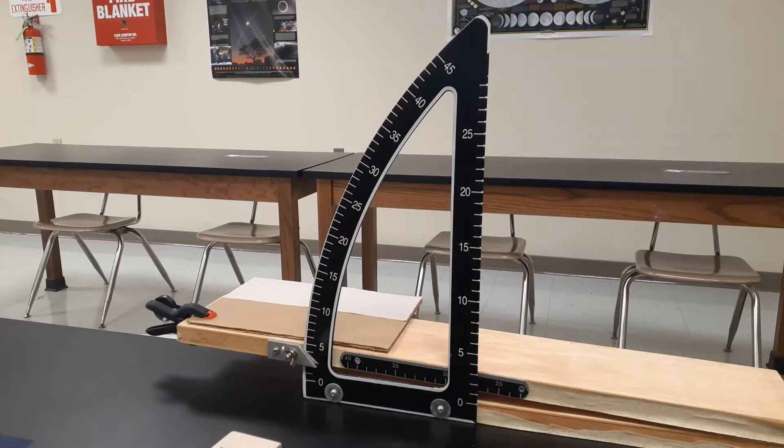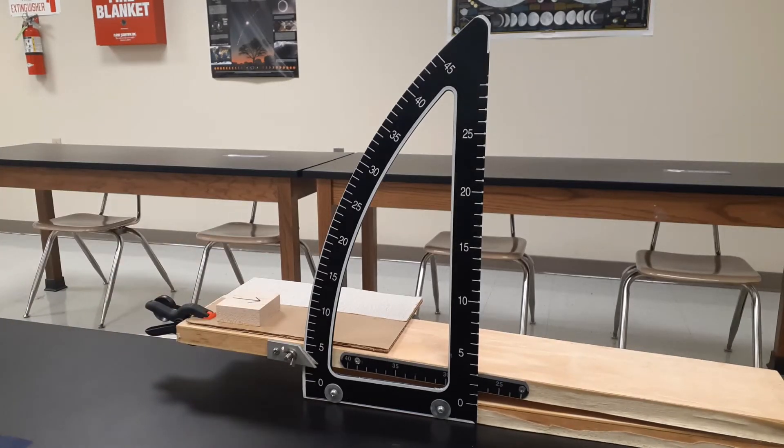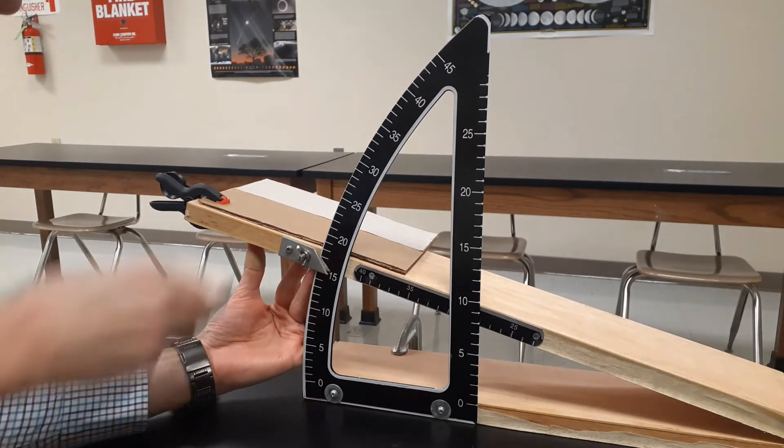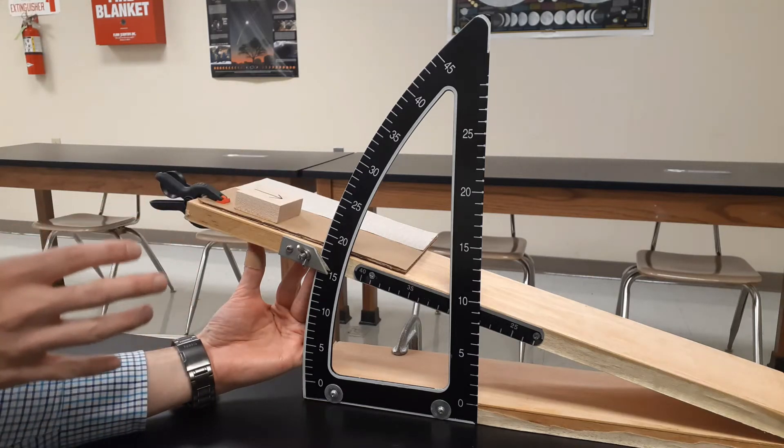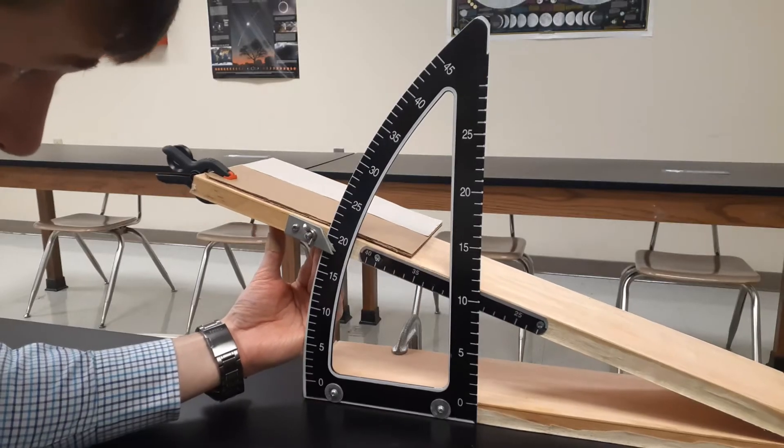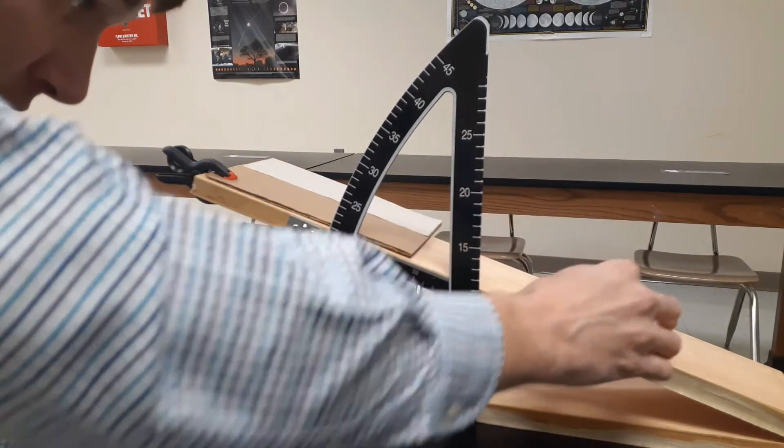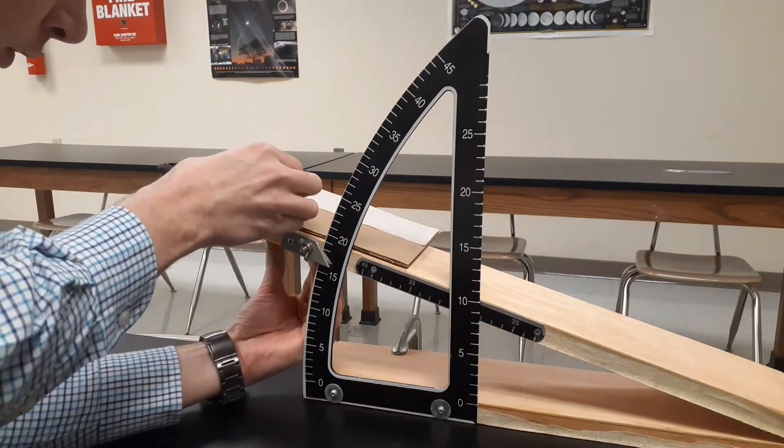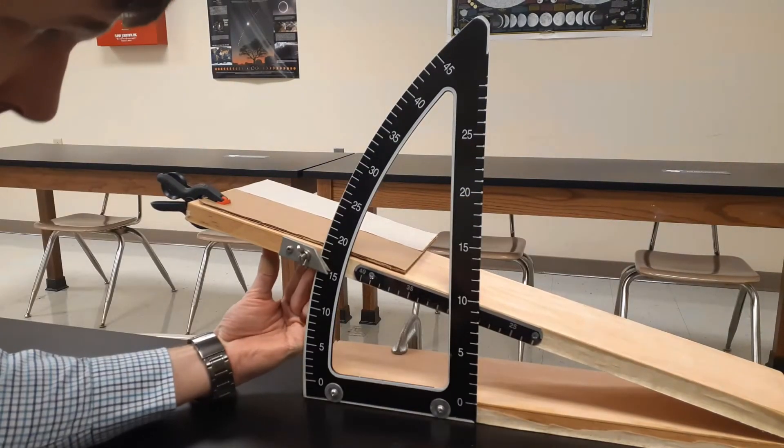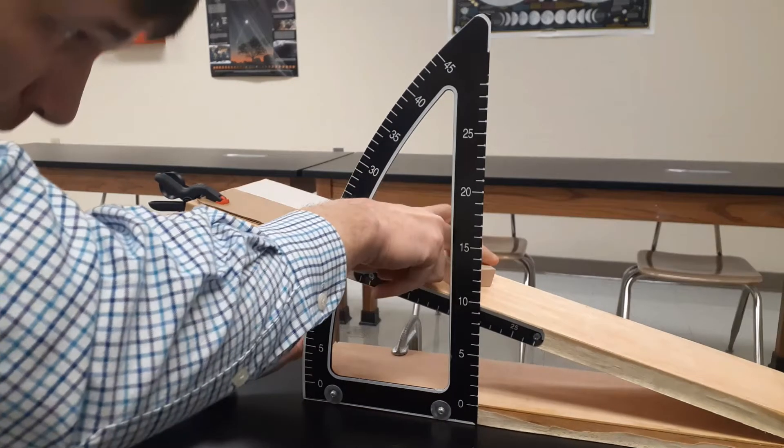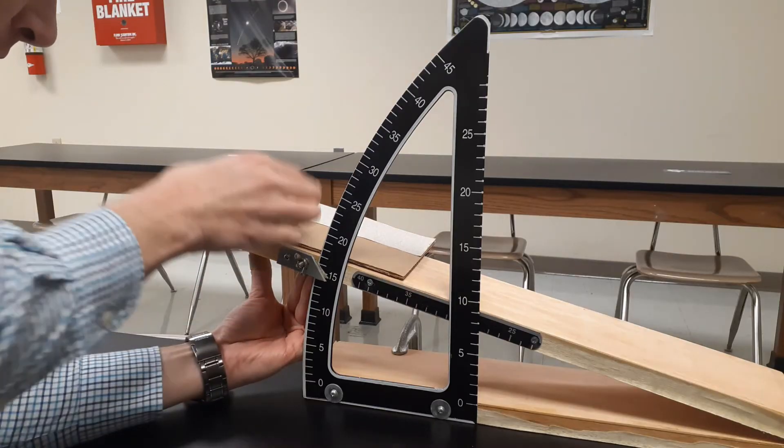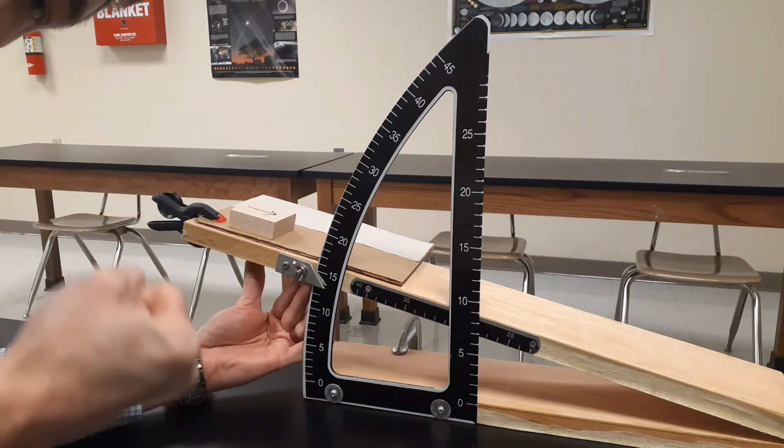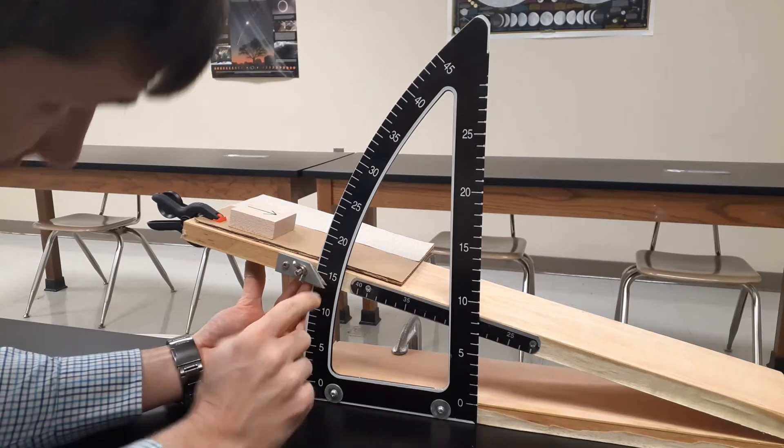Now for measuring kinetic friction, this is going to work a little bit differently. Instead of having my block on here in the first place, what I want to do is raise my ramp up to let's say 15 degrees. I want to gently put down my block and find the largest angle I can where I put down the block and the block just remains there. That as the block moves, its kinetic friction grabs it, brings it to a stop.